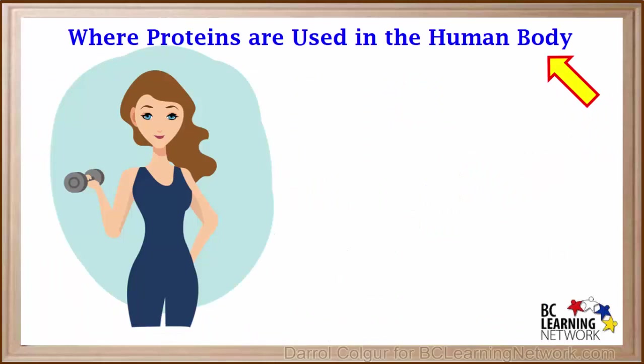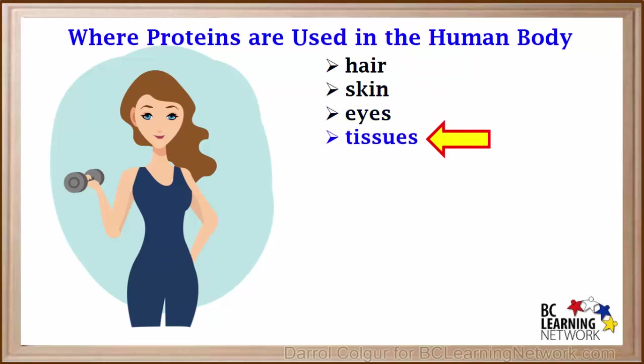Proteins are vitally important for the human body. They form our hair, skin, eyes, and many of our tissues including muscle and nerve tissue. They also constitute part of our bones. Our organs are also made of protein.